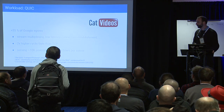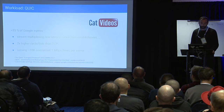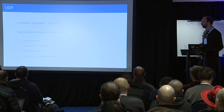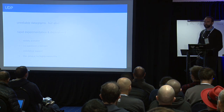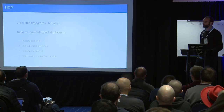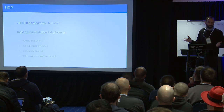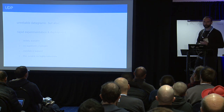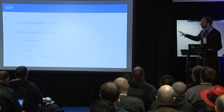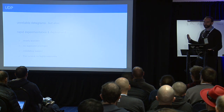QUIC is going through IETF standardization. One potential idea could be: why don't we just reimplement it in the kernel, and maybe that will make it more efficient? But I actually didn't want to do that because that will only benefit QUIC, not the next QUIC or whatever protocol. It's particularly relevant because there already are multiple versions of QUIC itself — there's GQuic, the Google version, and iQuic, the IETF standardized version, which is quite different. So instead, we're going to focus on optimizing the UDP stack for these kinds of protocols.